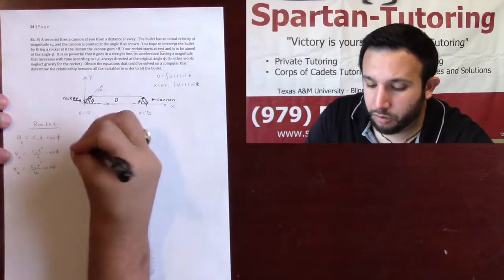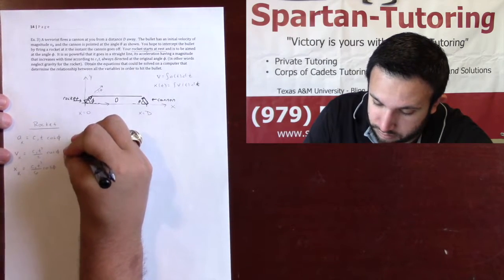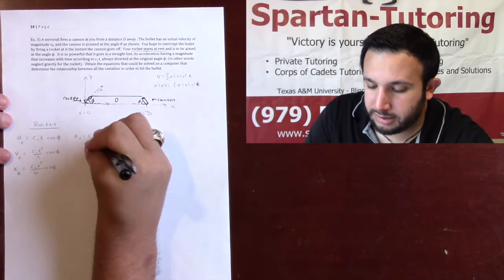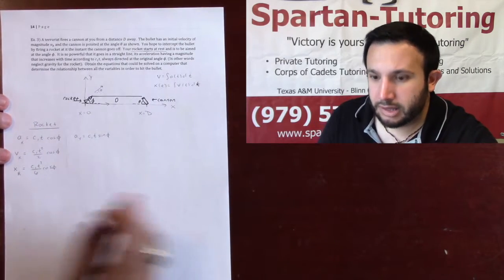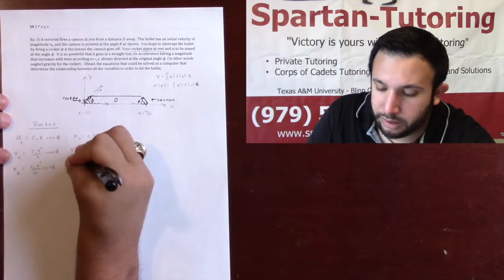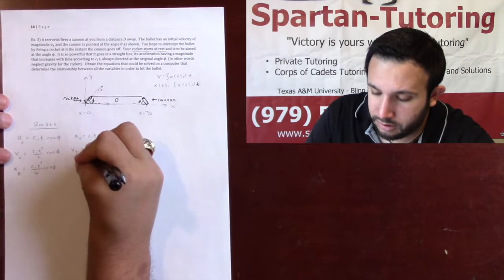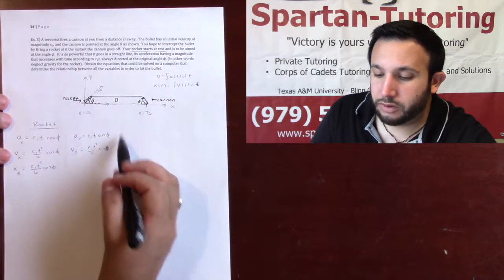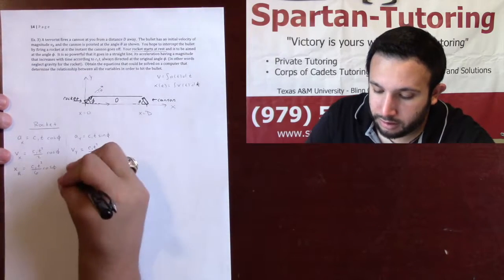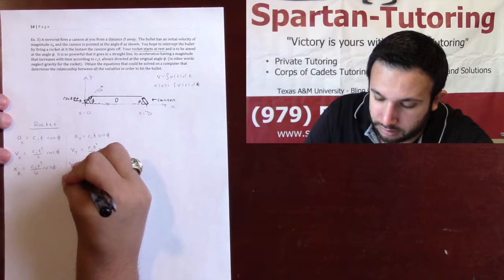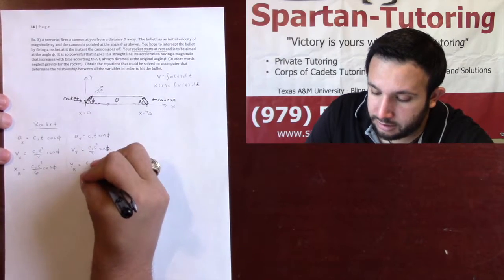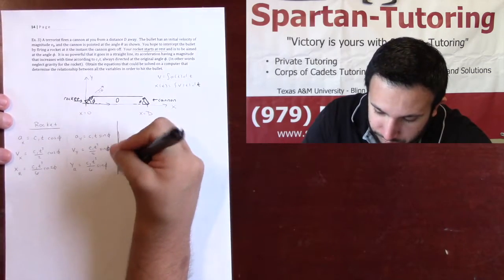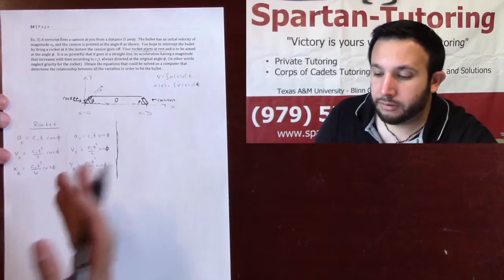Now for the y components of the rocket. The acceleration in y is c1t·sin(phi). Integrating gives the velocity in y: c1t²/2·sin(phi), with no initial velocity term since the rocket starts at rest. Integrating again gives the y position of the rocket: c1t³/6·sin(phi).